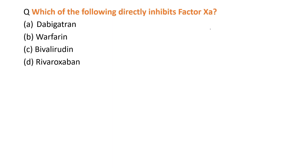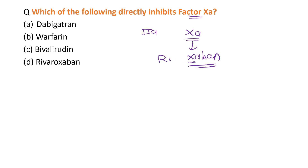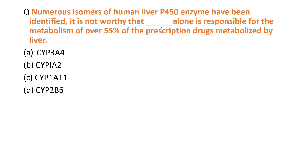The next MCQ: which of the following directly inhibits factor 10a? There are mainly two factors to know: factor 10a and factor 2a. Rivaroxaban directly inhibits factor 10a, while dabigatran is a factor 2a inhibitor. So the answer is rivaroxaban.